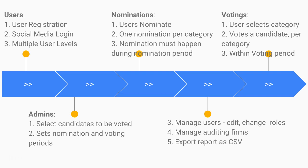Users nominate people and vote for them. Under the nomination flow, a user — admin or otherwise — signs in and enters the details of the person they want to nominate: 'We want to nominate Mr. John Doe, he does XYZ business, and this is why we're nominating him.' They fill out a short form and click submit.